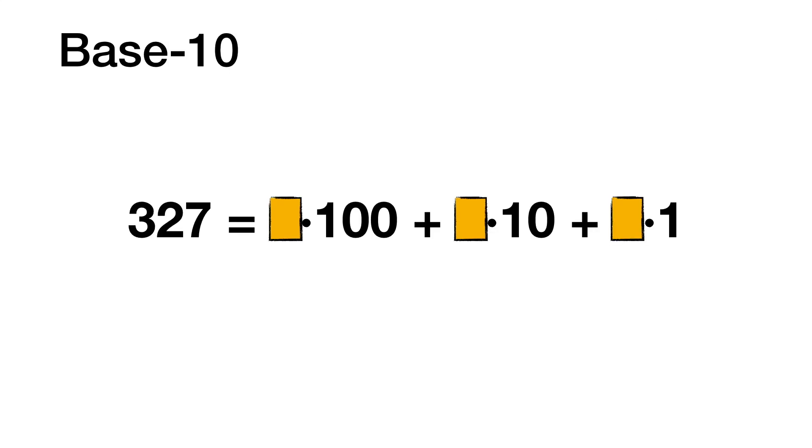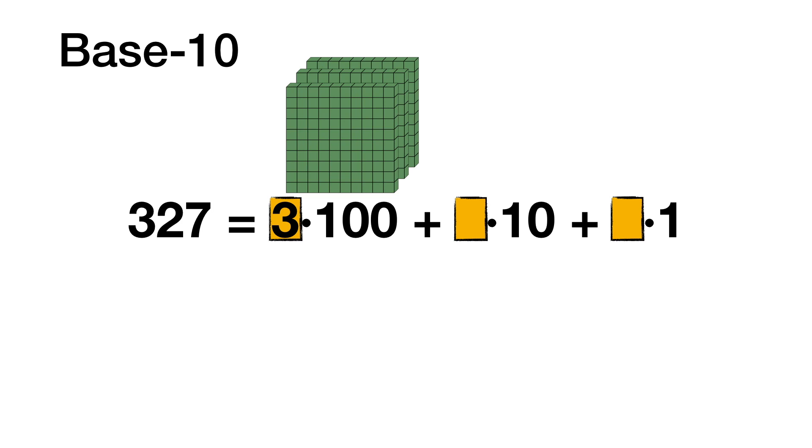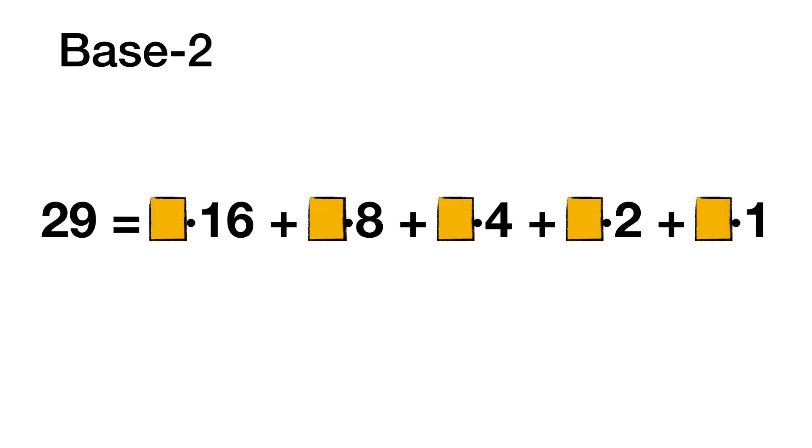Let's look at some examples. When we write the number 327, for instance, we break it up into multiples of powers of 10. There are three 100s, two 10s, and seven 1s. When we're working in base 2, we break up numbers into multiples of powers of 2.